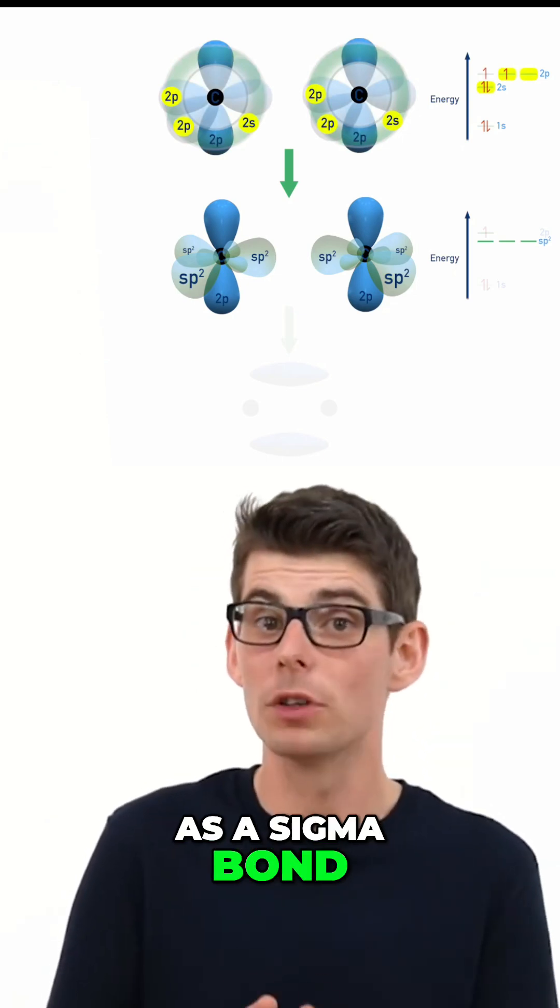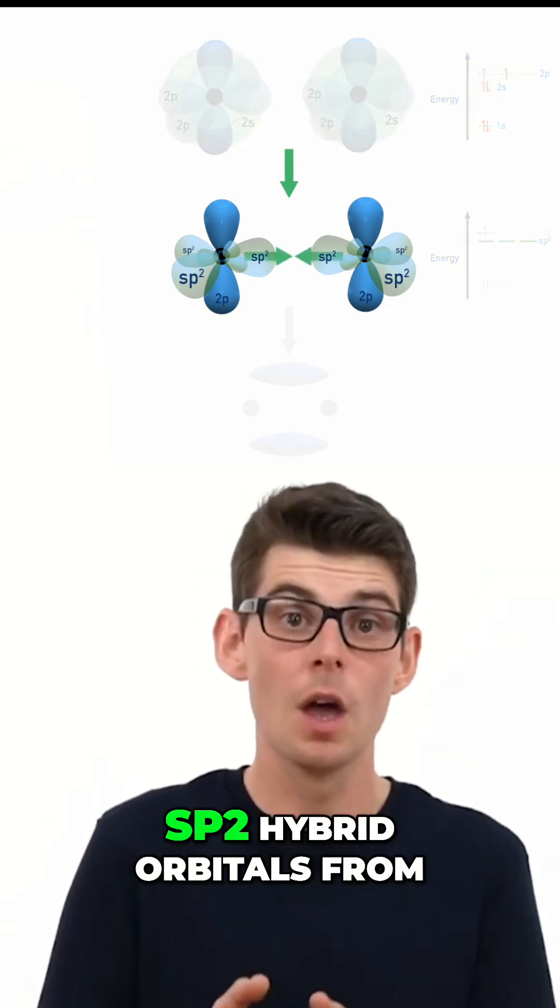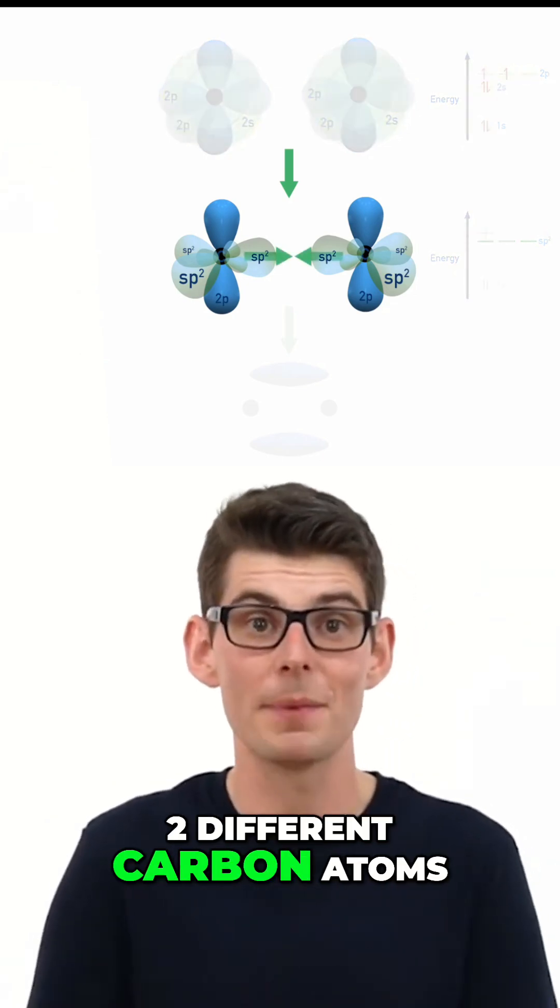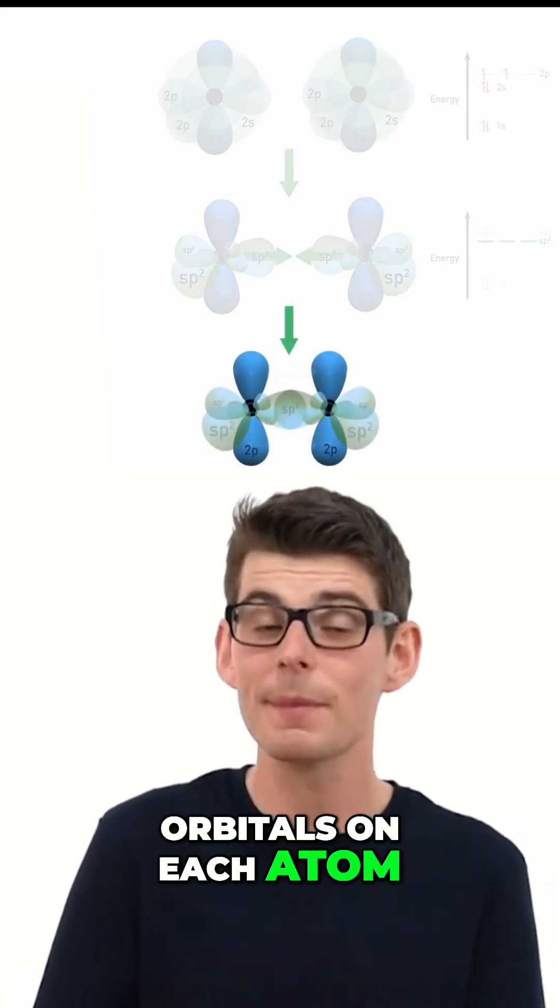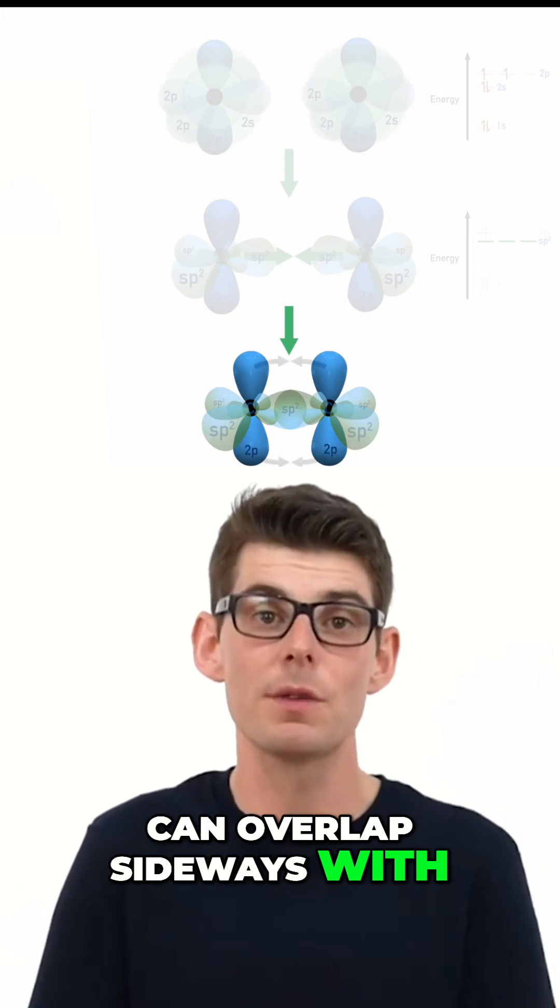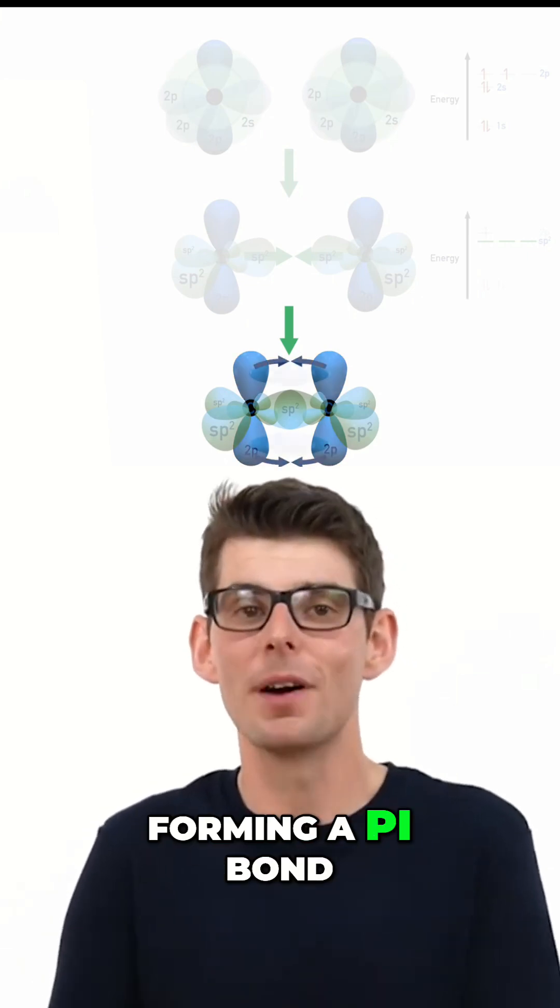Now as a sigma bond forms between the two sp2 hybrid orbitals from two different carbon atoms, the unhybridized half filled p orbitals on each atom can overlap sideways with each other, forming a pi bond.